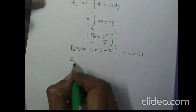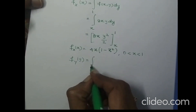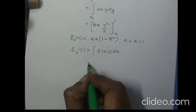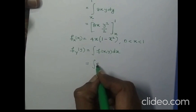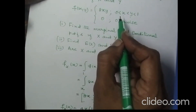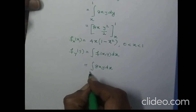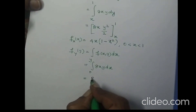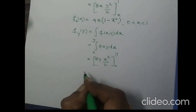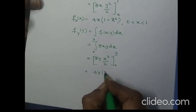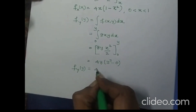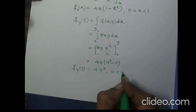Similarly, let us find the marginal density function of y. It is the integral of f(x, y) dx, integrating the joint density function 8xy with respect to x. The limit for x varies from 0 to y. So 8y is a constant; the integral of x is x²/2 evaluated between 0 to y. This gives 4y × y² = 4y³. So fy(y) = 4y³ for 0 < y < 1.